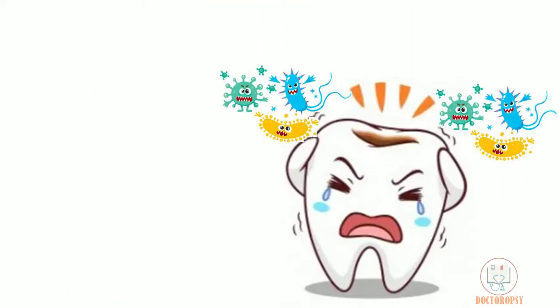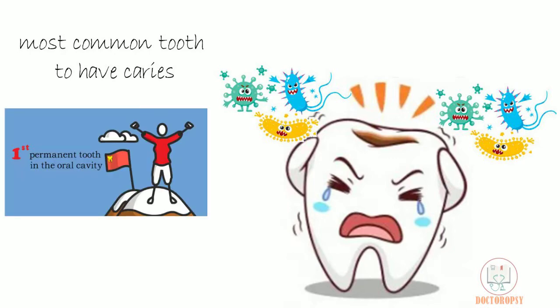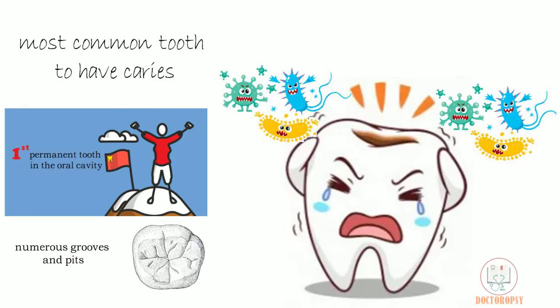The mandibular first molar is the most common tooth to have caries. This is because of two reasons: first, it is the first permanent tooth to erupt in the oral cavity and so is exposed to oral bacteria the longest. Second, it has numerous grooves and pits which lead to lodgement of food.